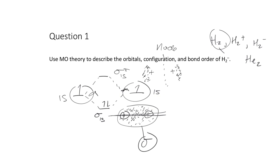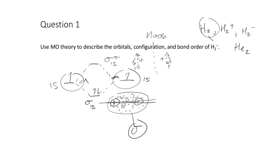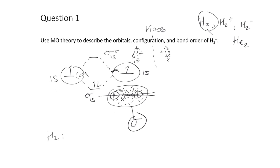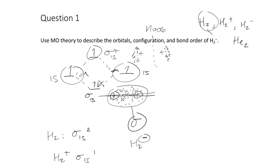For H2, we put two electrons into the bonding orbital. Writing configurations, hydrogen's configuration is sigma 1s² — the sigma bond comprised of the 1s orbitals with two electrons. For H2+, we remove one electron: sigma 1s¹. For H2-, we add an extra electron into the sigma* 1s, giving us sigma 1s² sigma* 1s¹.